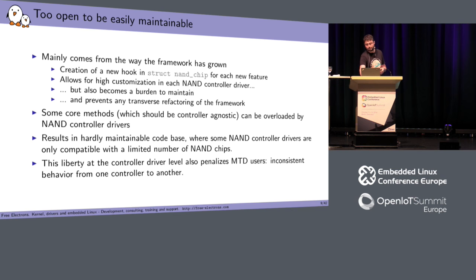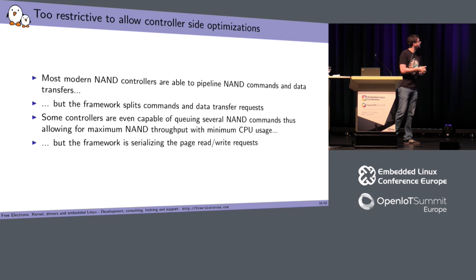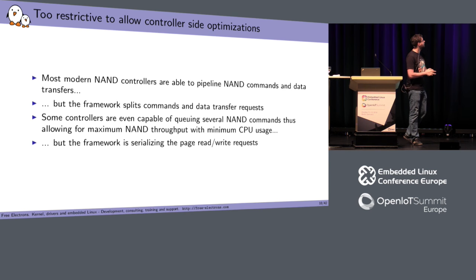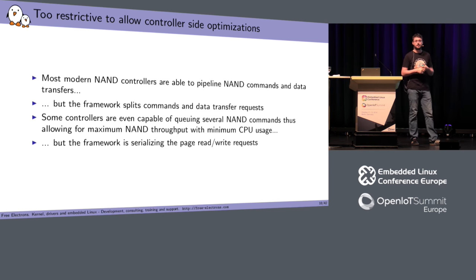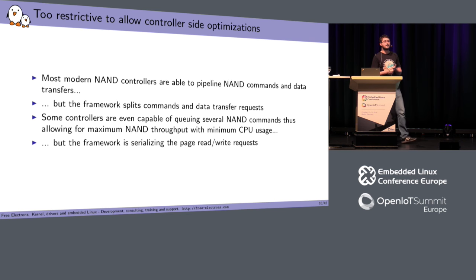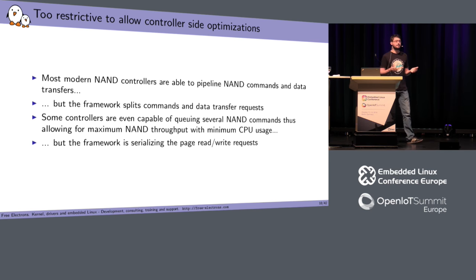The NAND subsystem is also too restrictive to allow good performance. Almost all modern controllers provide advanced features like pipelining, accessing several NAND dies in parallel, and other capabilities that could bring a huge performance gain. But the framework limits all of that because everything is queued inside the framework and then everything is serialized. This is a big problem.